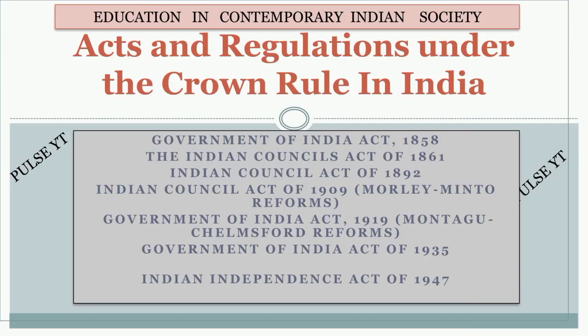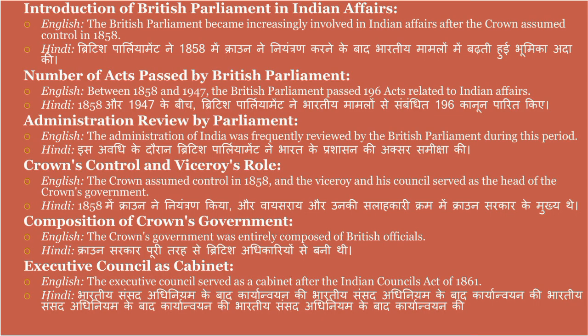Today we are starting our education in contemporary Indian society: acts and regulations under the crown rule in India. We will study these important laws from an exam point of view: Government of India Act 1858, Indian Councils Act of 1861, Indian Council Act of 1892, Indian Council Act of 1909 (Morley-Minto Reforms), Government of India Act 1919 (Montague-Chelmsford Reforms), Government of India Act of 1935, and Indian Independence Act of 1947.